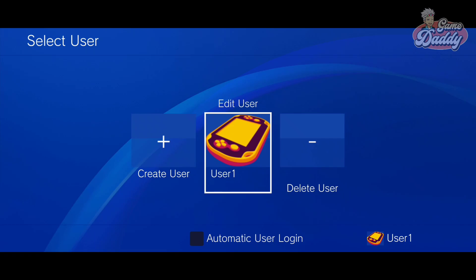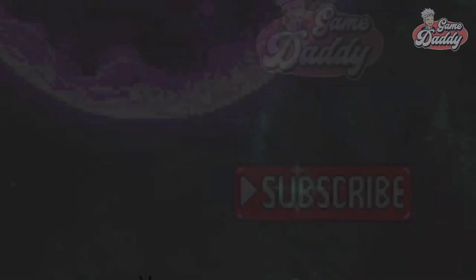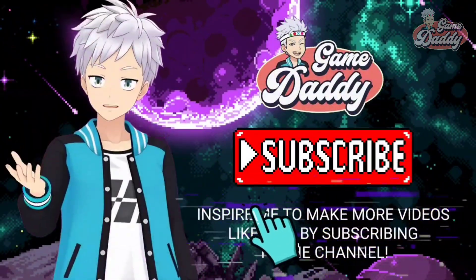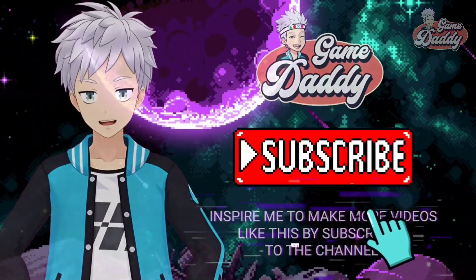Overall, the PS Vita operating system on Vita 3K Android version 3885 is still in a very early stage. Many system apps don't work, some crash immediately, and the OS currently does not sync with installed games inside Vita 3K. There is progress, but full system functionality is still a long way off. Thanks for watching, and I'll see you in the next update. Inspire me to make more videos like this by subscribing to the channel.